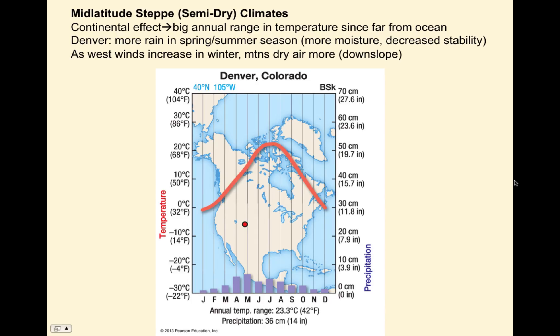Looking at Denver's climate — the mid-latitude steppe or semi-dry climate — there's a big continental effect with a decent temperature range since we're not near the moderating effect of the ocean. We have more rain in spring and summer when there's more moisture and decreased stability from a warming surface. In wintertime, strong west winds come in with the increasing jet, but the mountains force the air to compress as it comes downslope into Denver and Boulder, drying it out, so wintertime doesn't get as much moisture as spring and summer.